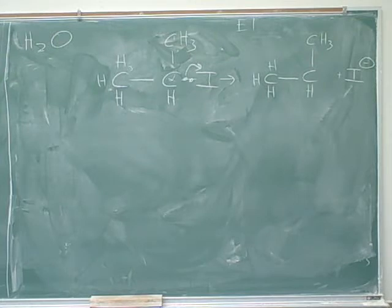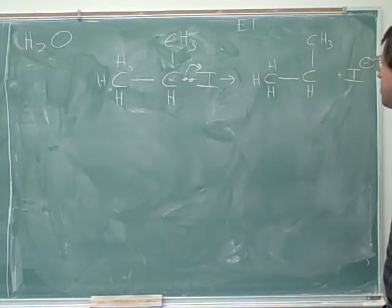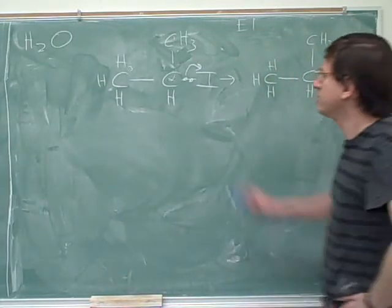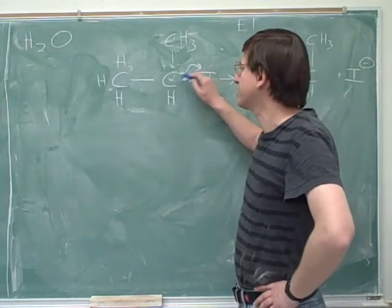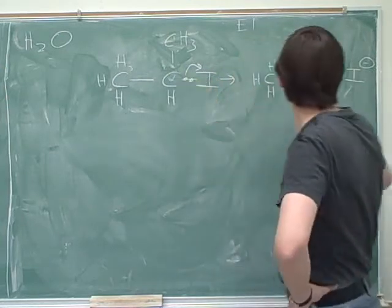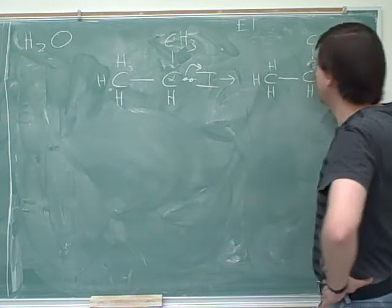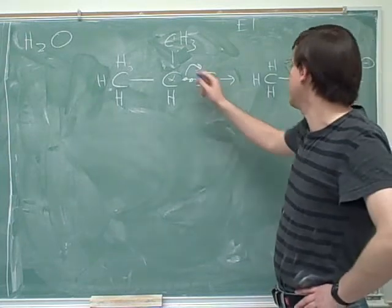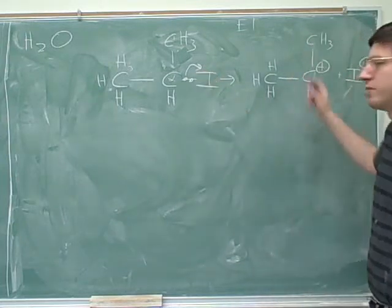Yeah, that's very important. So let's make sure we get the right product here. Now, the most important thing here, as usual, is the charges. Who's losing these electrons? The alpha carbon. Since it started neutral, it has to end up positive. And then the iodide was gaining the electrons, so it ended up negative. So here's our carbocation.